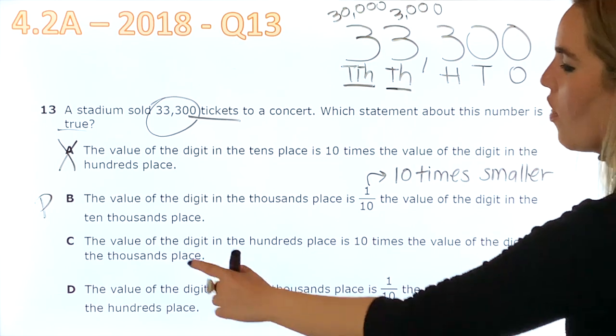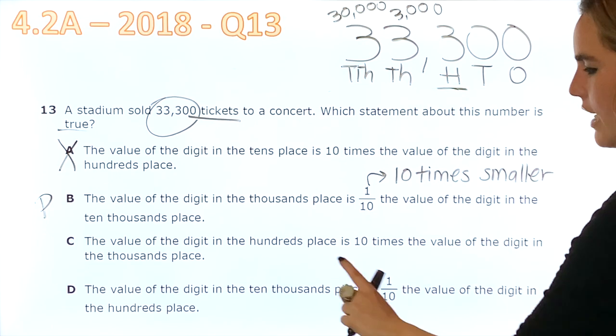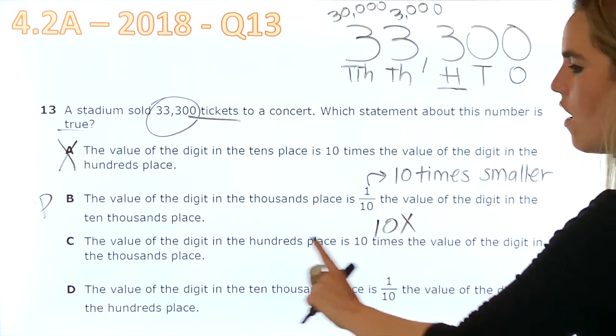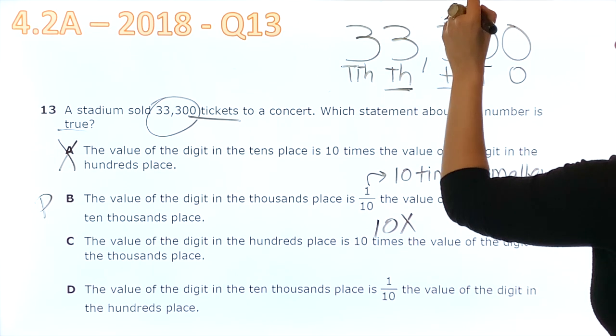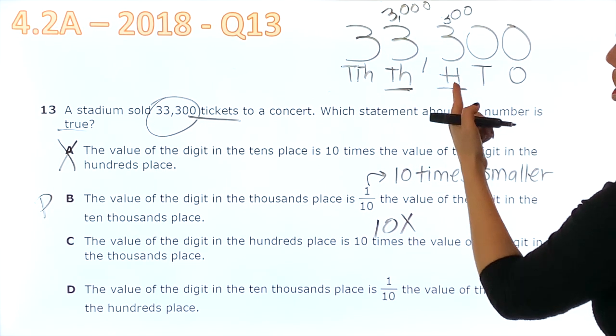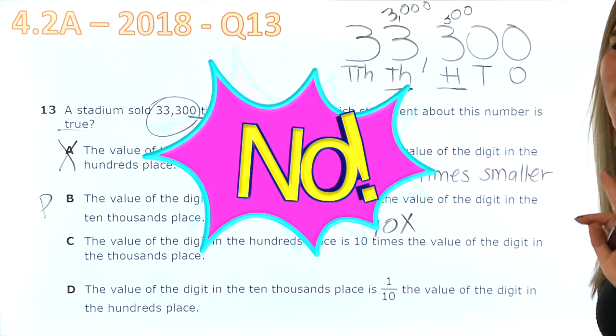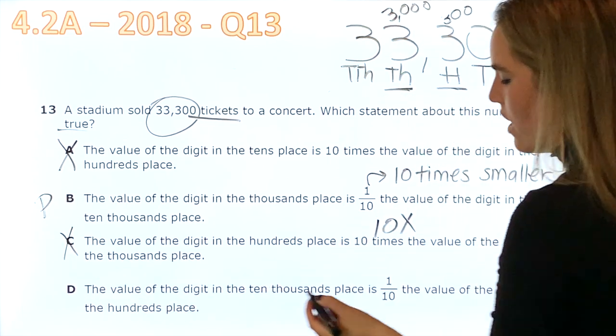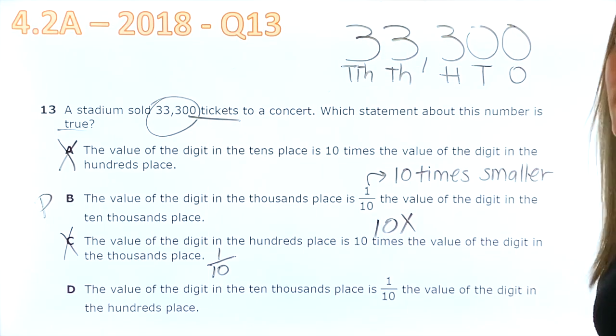Now, let's evaluate C. The value of the digit in the hundreds place. Now, we want to see the hundreds place is 10 times, 10 times bigger. The value of the digit on the thousands place. So, we are comparing this three is 300 and this three is 3,000. Do you think that 300 is bigger than 3,000? Absolutely not. This is one-tenth of this one. So, no, no. And you're just going to justify, you're not choosing this one because it's one-tenth. Let's evaluate D.